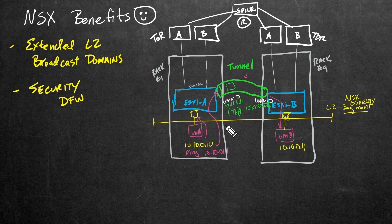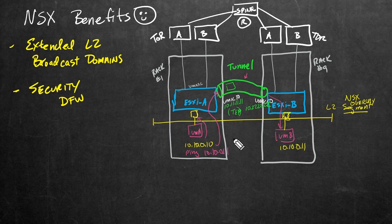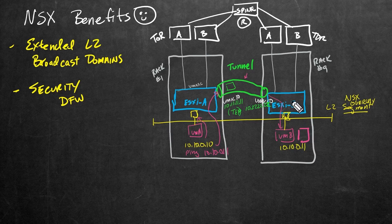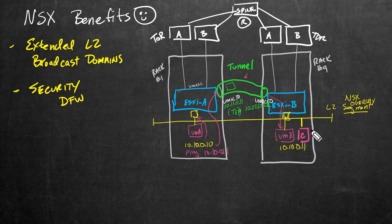So if we want to allow SSH, HTTPS, ICMP, or anything else, using the security services we can control what is or is not allowed between the two VMs. That also applies to two VMs sitting on the same ESXi host. Over here at ESXi B, if we had VM B and VM C both connected to that same segment, we can also control what's allowed back and forth between those two VMs as well.